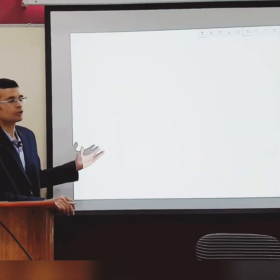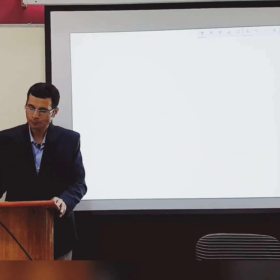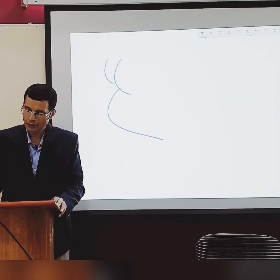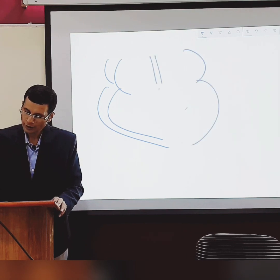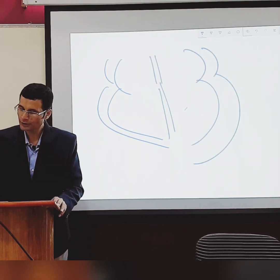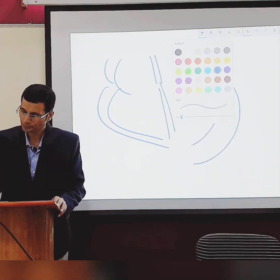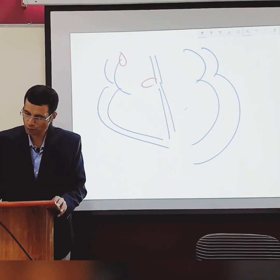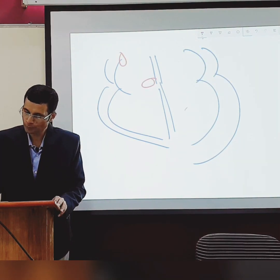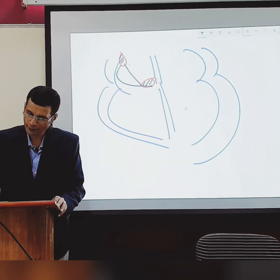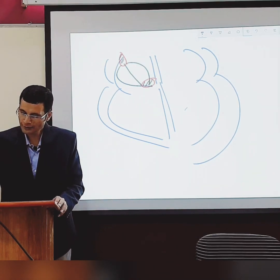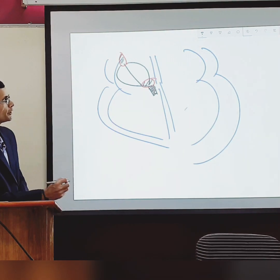Here is a complete diagram of the heart showing the conducting system. We have the SA node, AV node, and inter-nodal pathways that take the impulse from the SA node to the AV node. Then there is the bundle of His — listen to this part carefully.